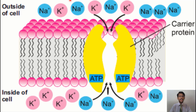So all sodium ions are present on the outer side of the cell, and the potassium ions present outside in pink color are moved to the inside of the cell, so that potassium ions remain inside the cell. In this way, the concentration of sodium and potassium ions is maintained.